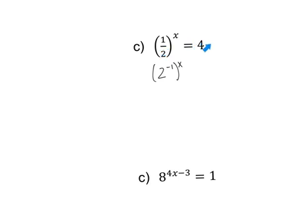I've changed one-half to 2 to the negative 1, because a negative exponent throws the base into the denominator to make the exponent positive. So the question is, can this 4 have a base of 2? It turns out it can — 2 to the second power is equivalent to 4. I've changed this 4 to a base of 2, so now since the bases are the same, I can cancel them out.